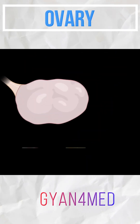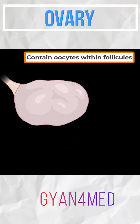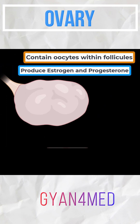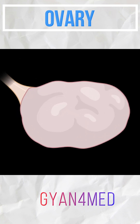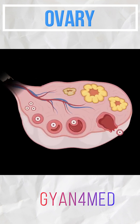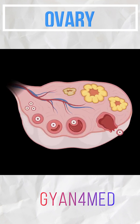Now let's go detailed into it. Ovaries contain oocytes within follicles, and they produce steroid hormones, which are estrogen and progesterone. If we take one ovary and slice it right about here, then remove the upper half, this is what the inner surface of the ovary generally looks like.